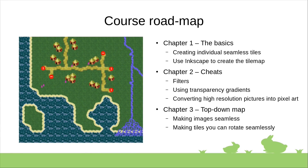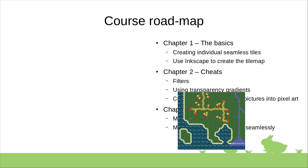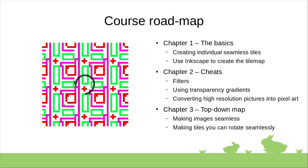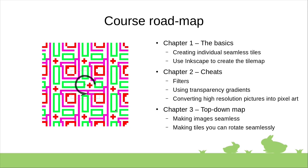Finally, in chapter three we are going to make this top-down map. Some of the interesting things we will learn is how to make images and photographs seamless, and we are also going to learn how to make tiles which are rotationally seamless — in other words, tiles which we can rotate and they will still be seamless with the neighboring tiles.